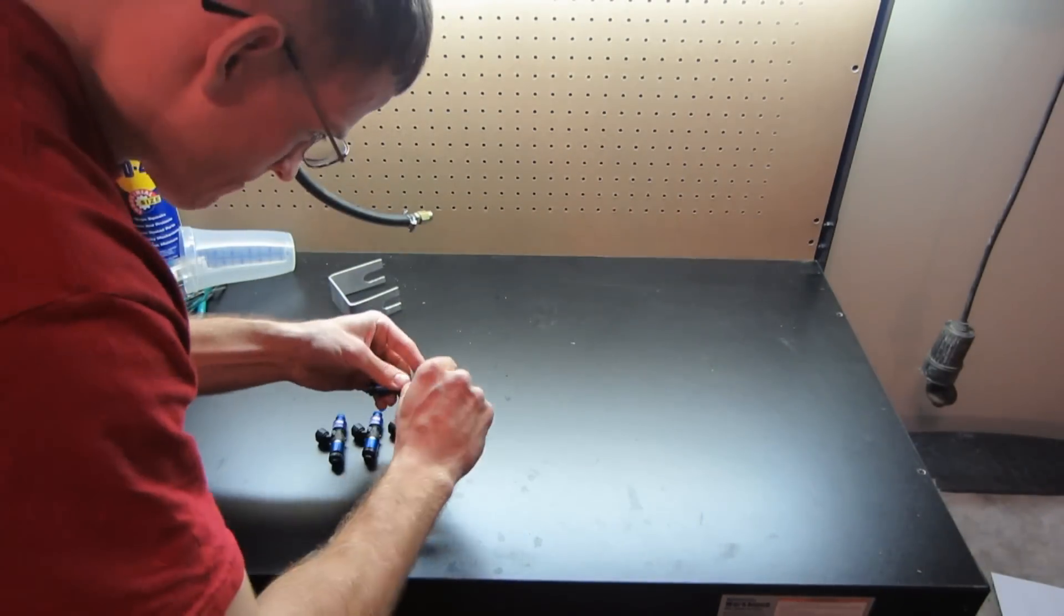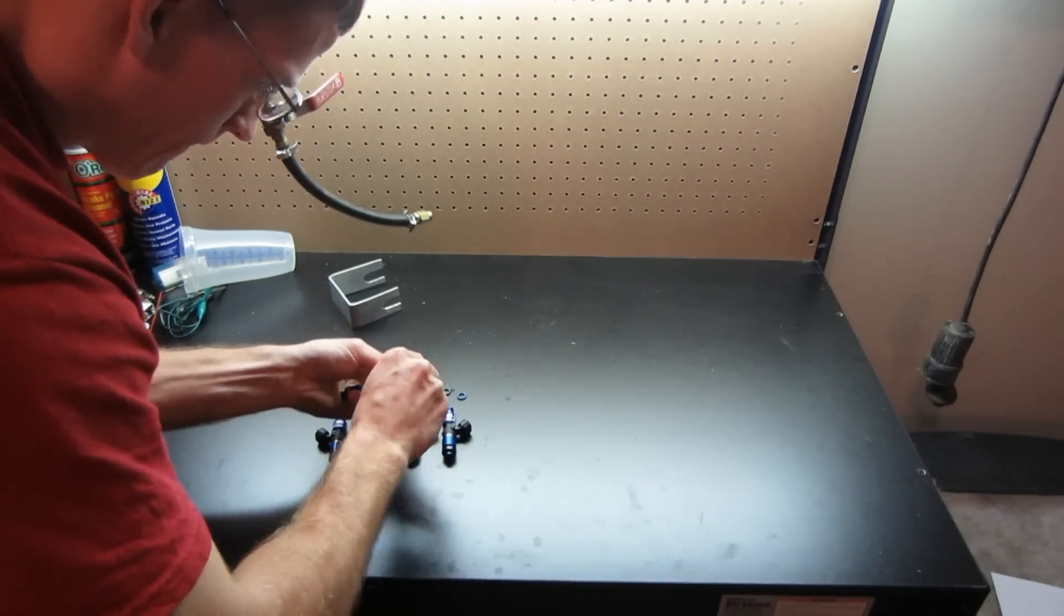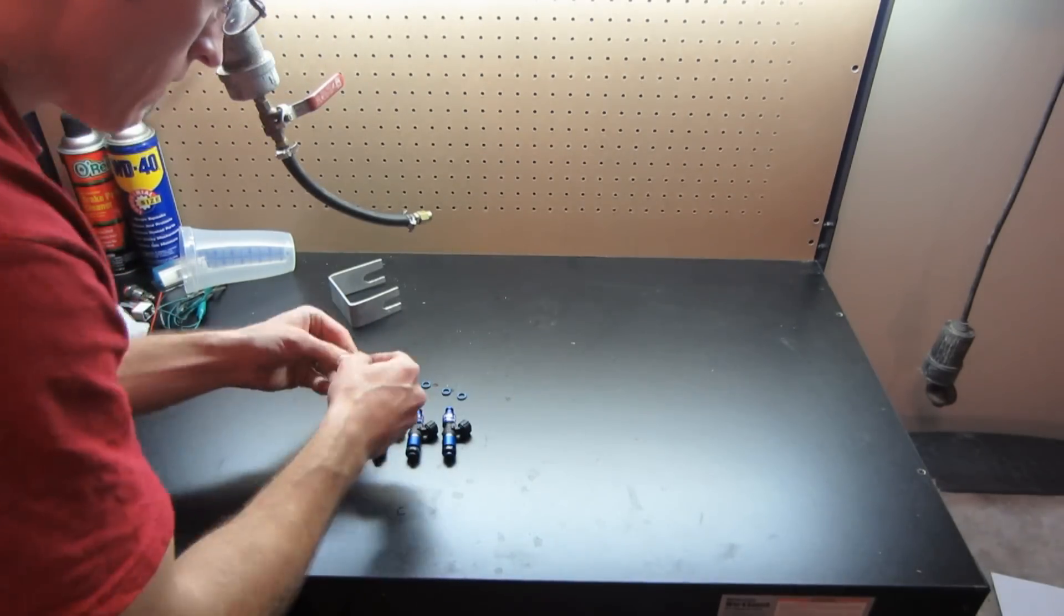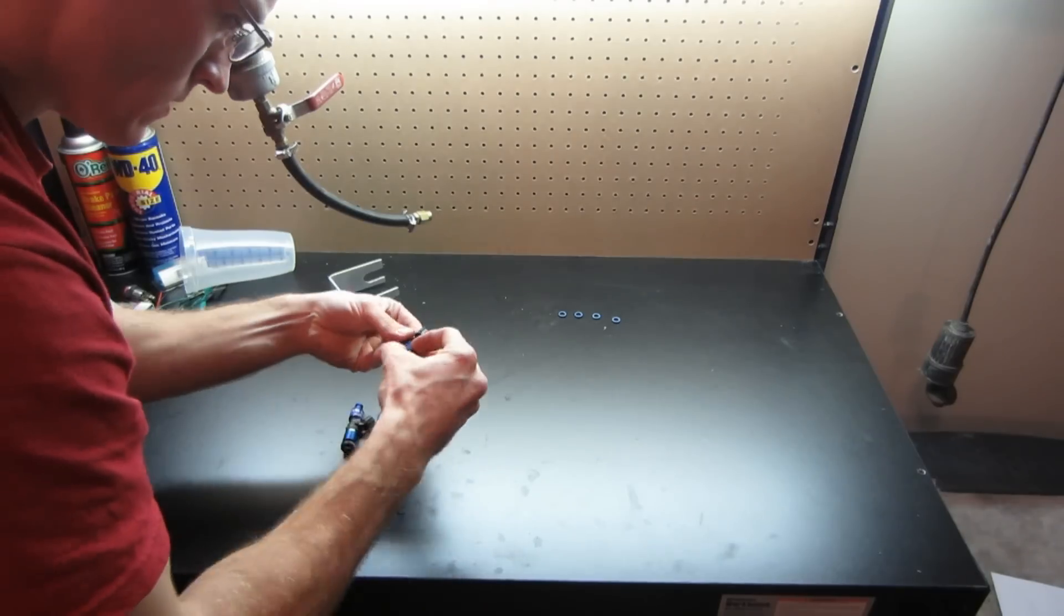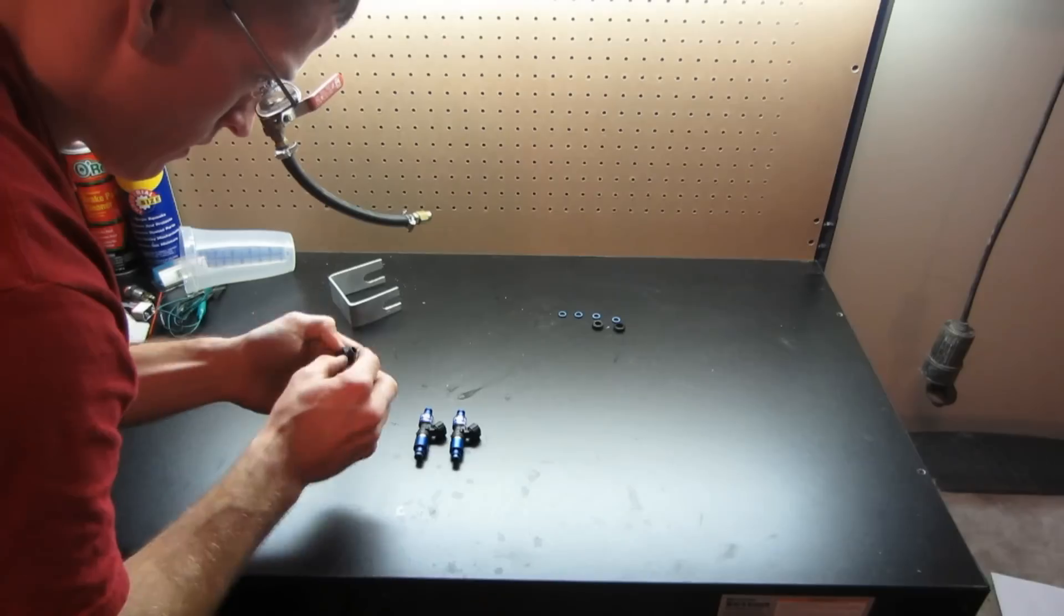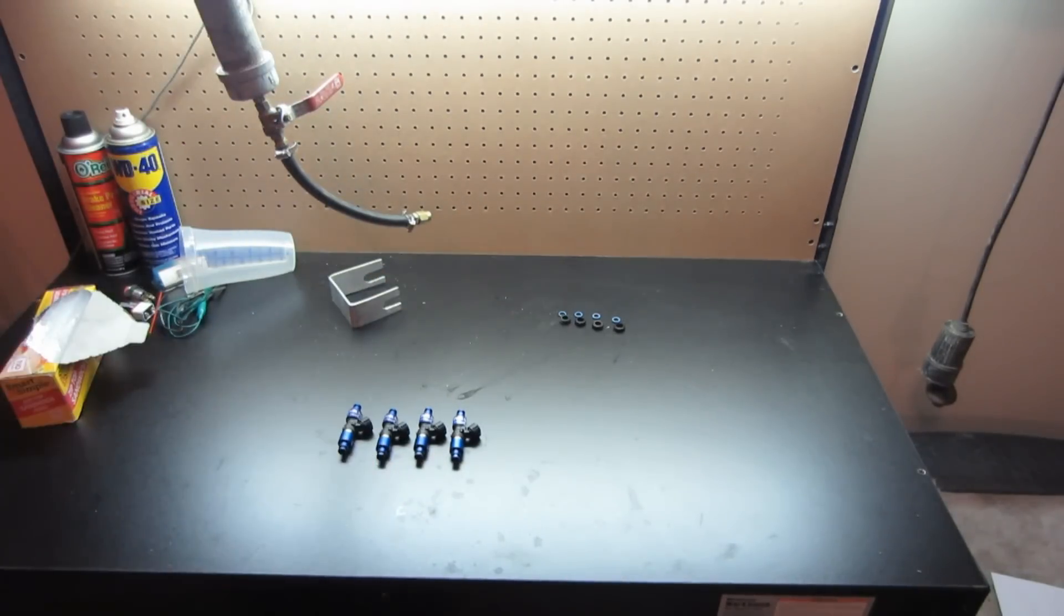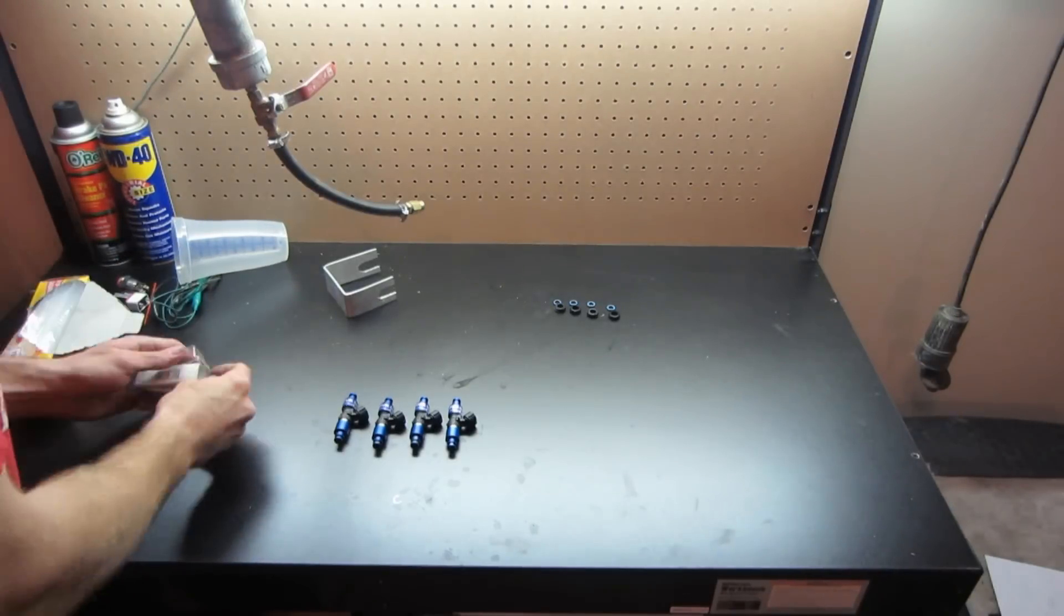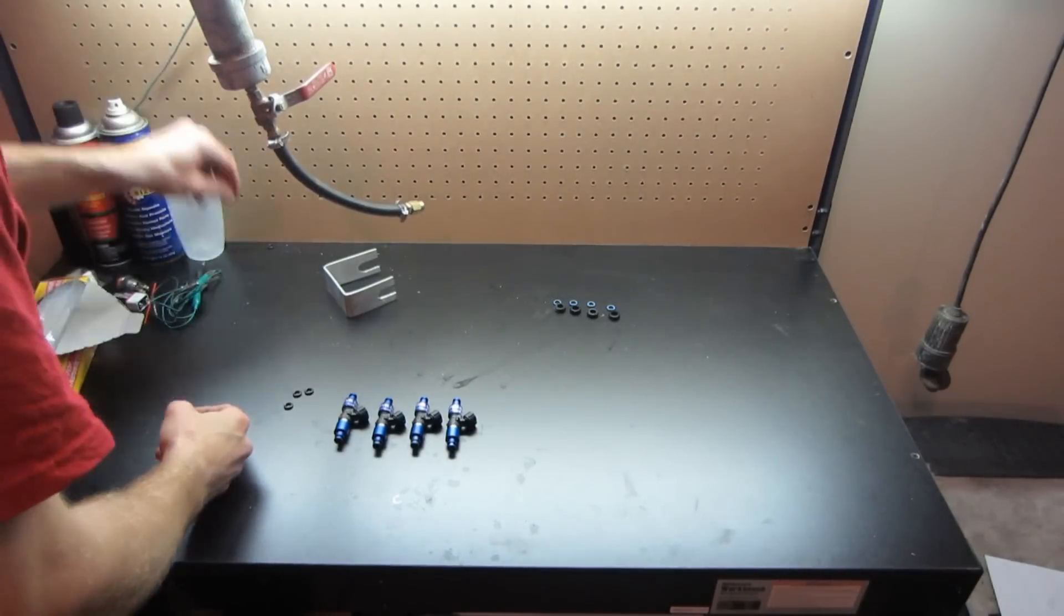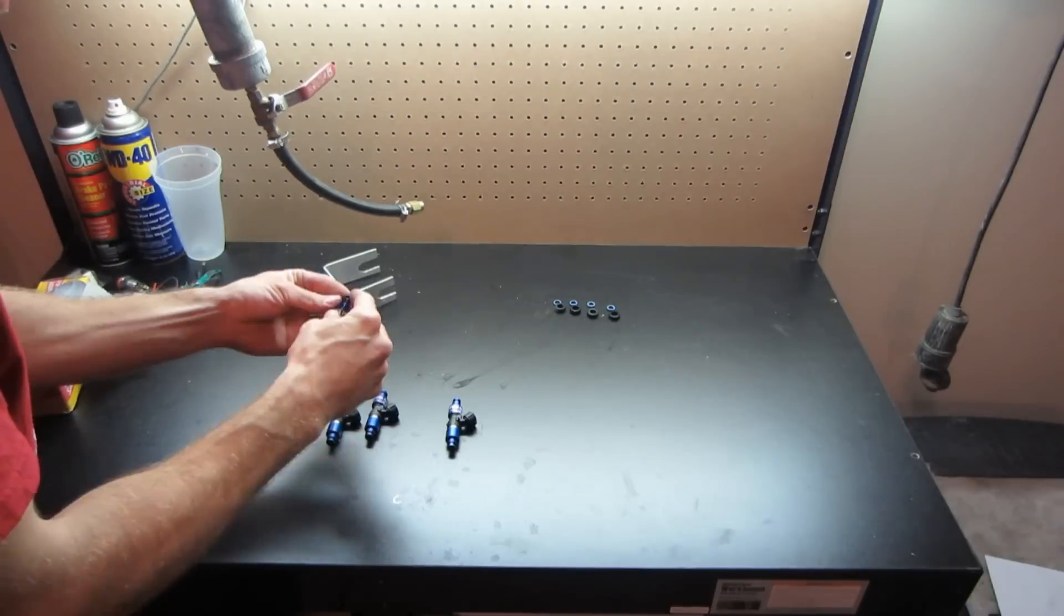We remove the injector seals and O-rings so that they are not damaged during the cleaning and pickling process. We will use these cheap rubber O-rings to seal the injectors to the tool. They are available in various sizes at your local hardware store.